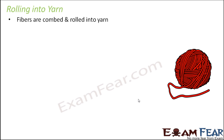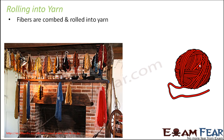The final step is rolling into yarn. Once you have the woolen fibers, you comb them to make them smooth so they don't get tangled, and then roll them into yarn. These are called wool yarns. Rolling them makes them easier to handle — you would have seen your moms or grandmoms making sweaters using wool yarns, purchasing the yarn and weaving it to form a garment.